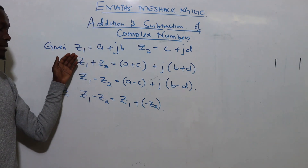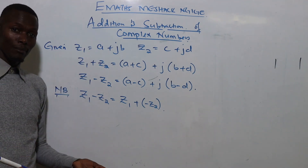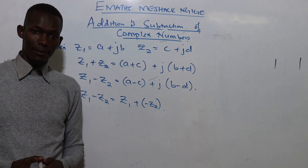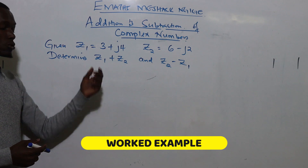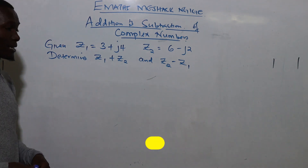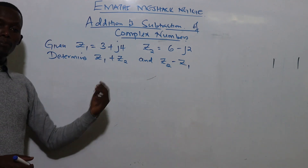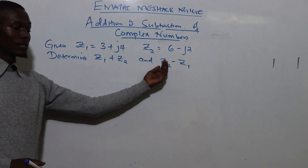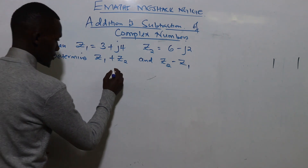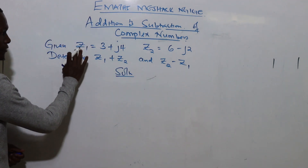This is the addition and subtraction of complex numbers. Let's check an example. You are given z1 equals 3 plus j4 and z2 equals 6 minus j2. Determine z1 plus z2 and z2 minus z1.